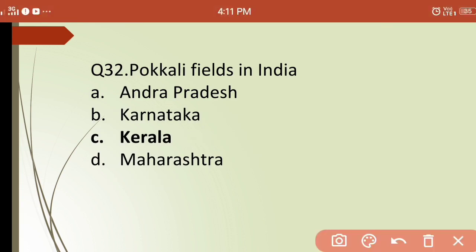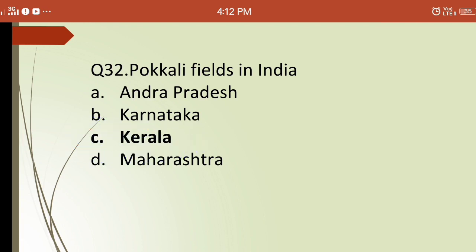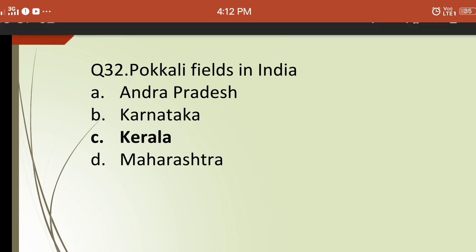Thirty-second question: pokkali fields in India are present in which state? Options are: (a) Andhra Pradesh, (b) Karnataka, (c) Kerala, (d) Maharashtra. The correct answer is (c) Kerala — pokkali fields are rice-cum-fish fields where fish are produced alongside rice, and these are located in Kerala.